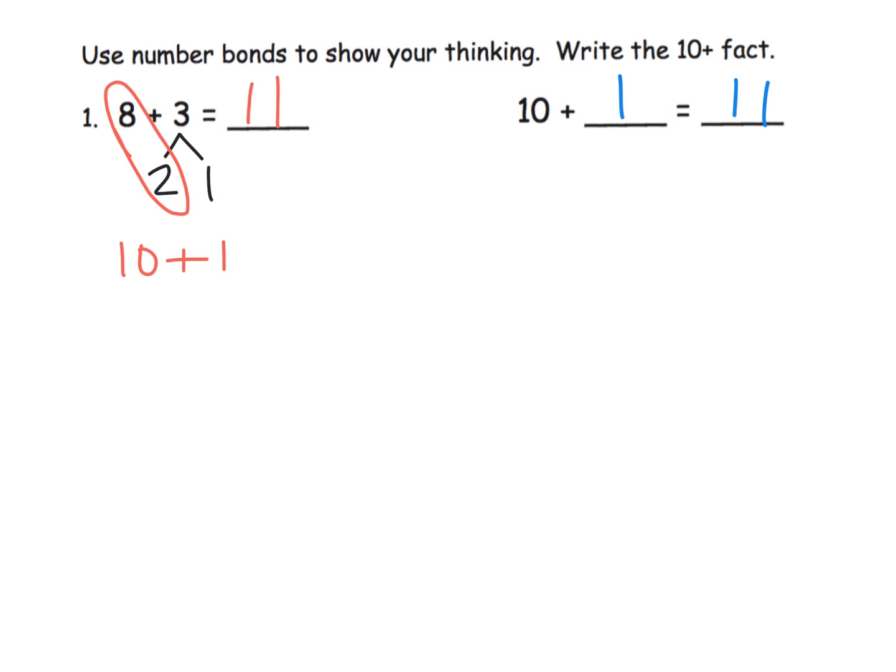So when we're talking about number bonds, this is right here, this is the component that we're talking about, where you take the 3 and decompose it so that you're going to make a friendly number. You're going to make that 10. And then this is what you have left over, so you have 10 plus 1.